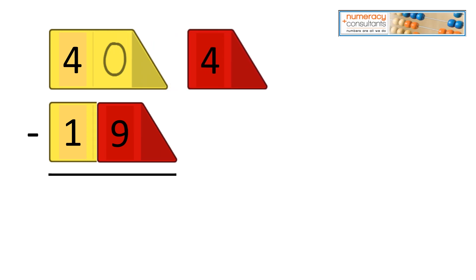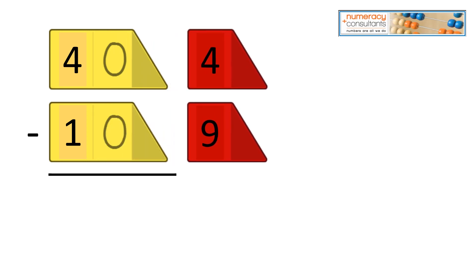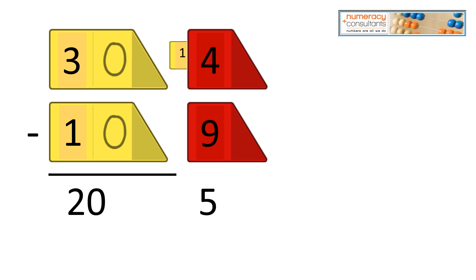Next problem: 44 minus 19. Everything doesn't work out here because 4 minus 9 is not something we can do. So we need to slide a 10 over from our 40. Our 40 becomes 30. Now we have 30 minus 10, which is 20, and 14 minus 9, which equals 5. Our answer is 25.